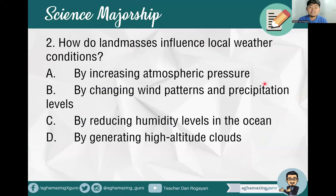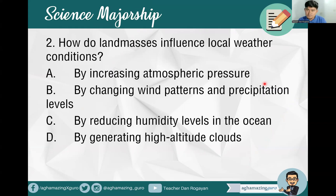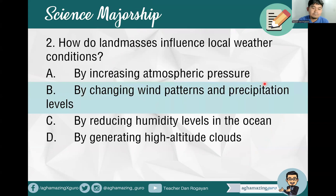Number two: How do land masses influence local weather conditions? A, by increasing atmospheric pressure. B, by changing wind patterns and precipitation levels. C, by reducing humidity levels in the ocean. Or D, by generating high-altitude clouds. The answer is letter B — by changing wind patterns and precipitation levels.